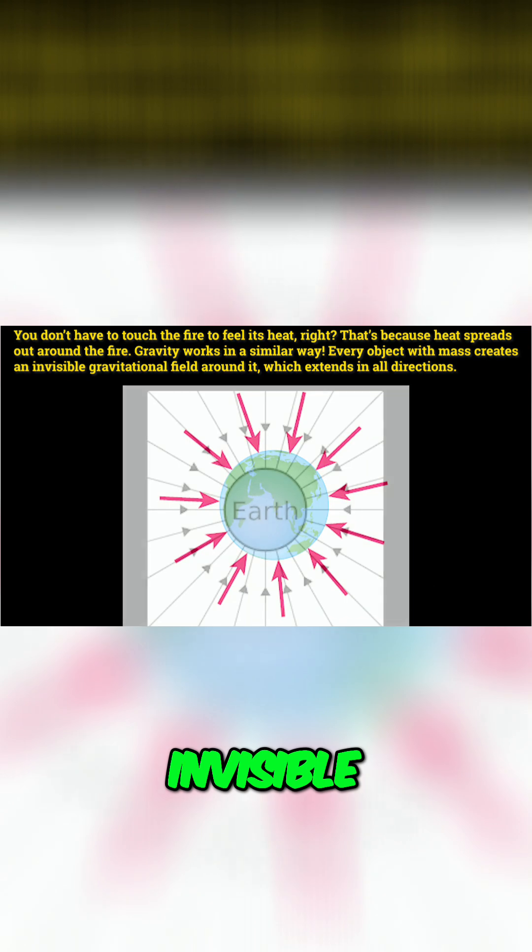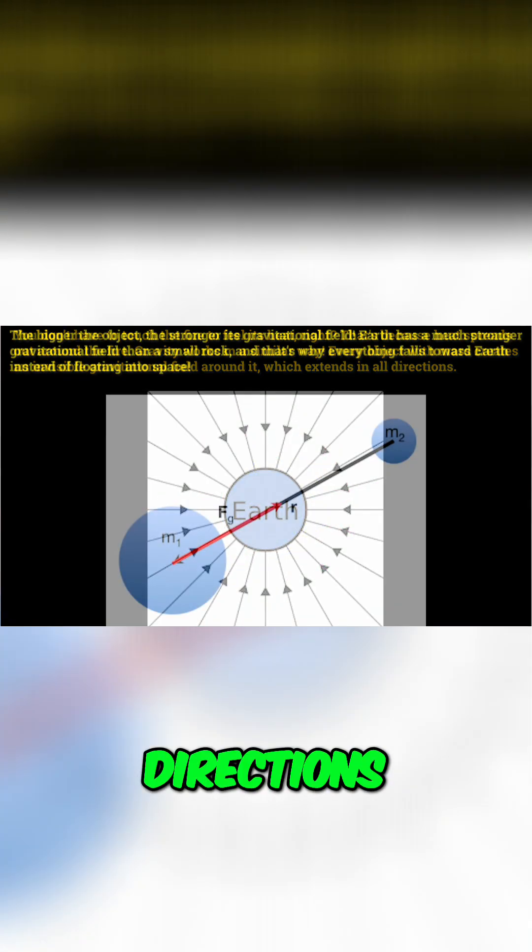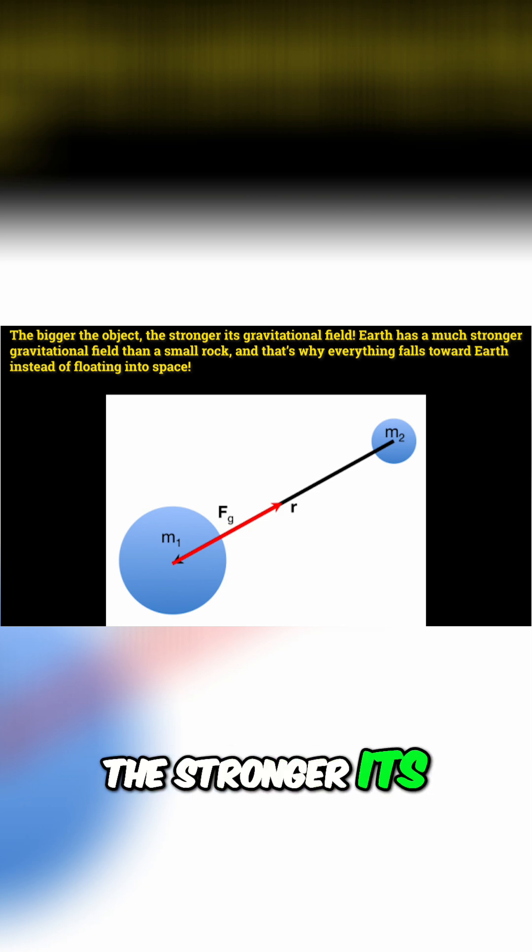Every object with mass creates an invisible gravitational field around it which extends in all directions. The bigger the object the stronger its gravitational field.